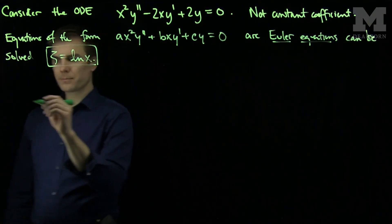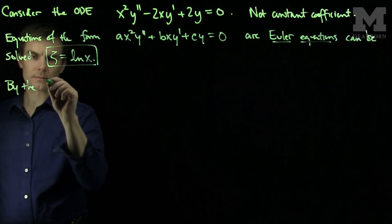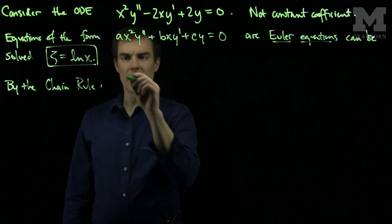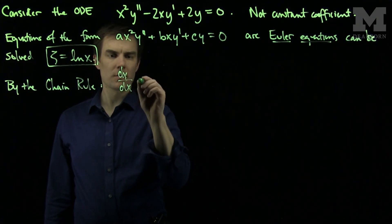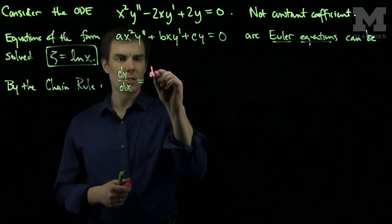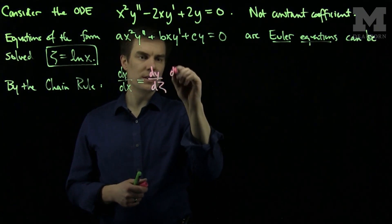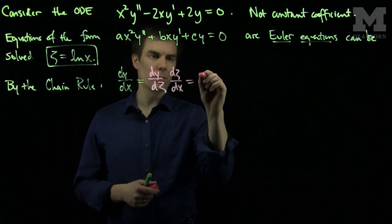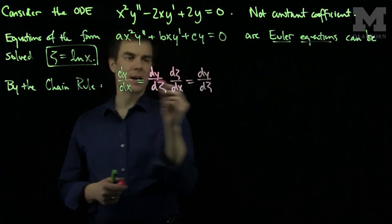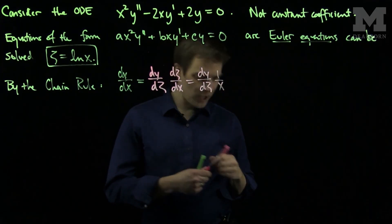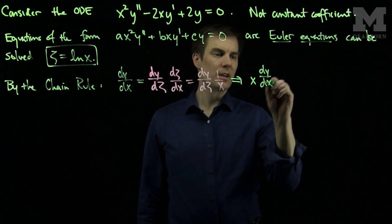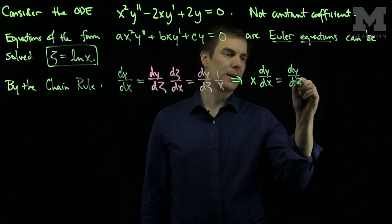So we note by the chain rule that dy dx is, well the chain rule tells us that dy dx will be dy d zeta times d zeta dx, which will be dy d zeta. And then the derivative of zeta with respect to x is 1 over x. And so from the chain rule, we'll tell therefore that x dy dx can be replaced with dy d zeta.